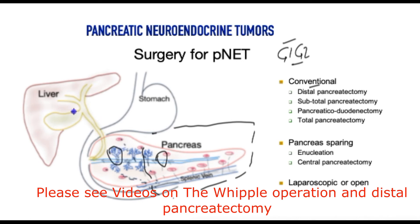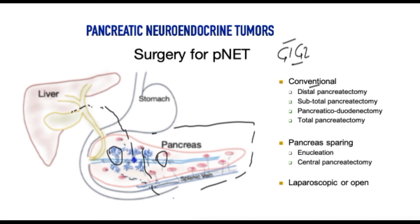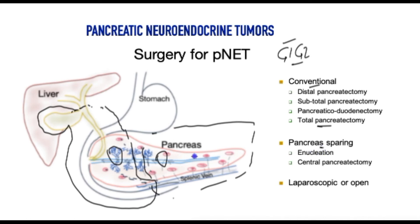In a pancreaticoduodenectomy, the bowel, gallbladder, part of the small bowel or stomach, and the head of the pancreas are all removed together. Rarely, the whole pancreas may be removed in a total pancreatectomy. For more benign tumours, smaller local resections around the tumour are possible, as well as central pancreatectomy where both halves are preserved but the middle section is removed.